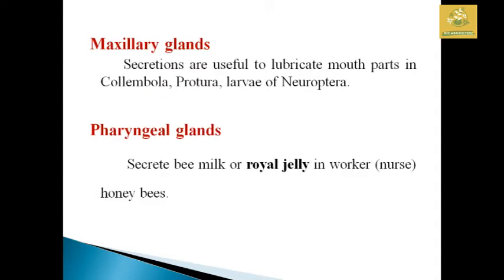The maxillary gland secretions are used for lubricating mouthparts of Collembola, Protura, as well as the larvae of Neuroptera. After that, the pharyngeal gland secretes bee milk as well as royal jelly in the worker honeybees, which is especially specialized.